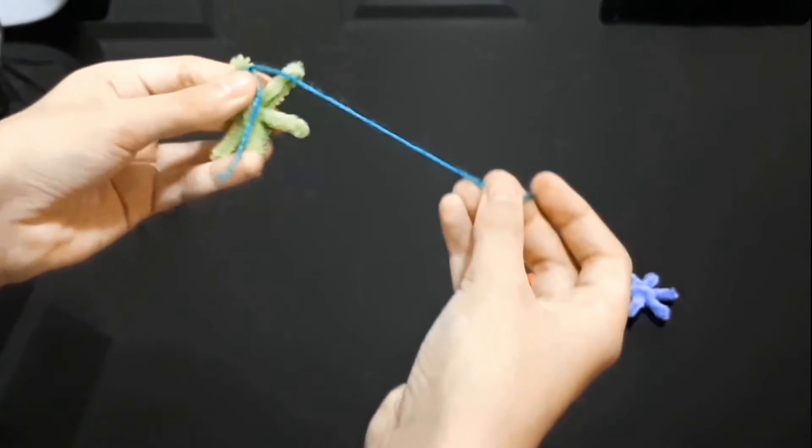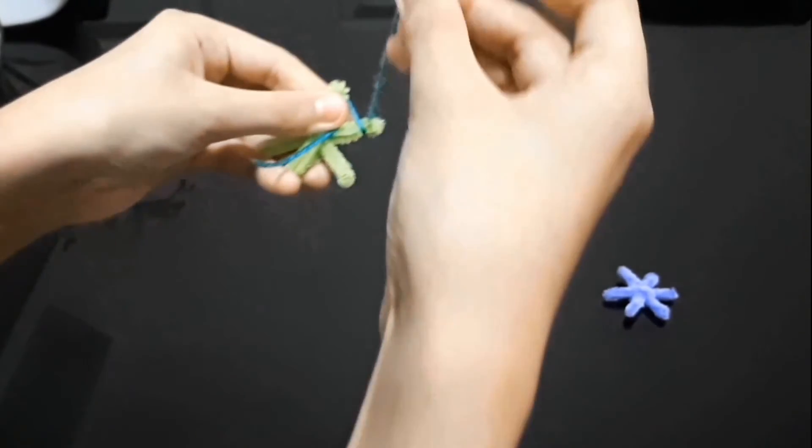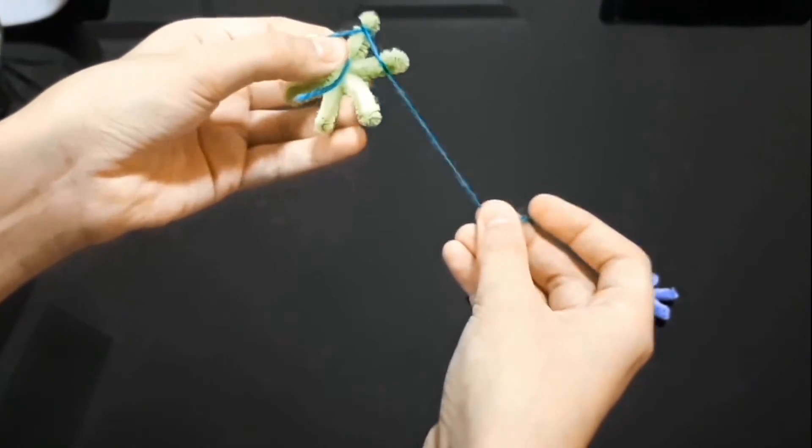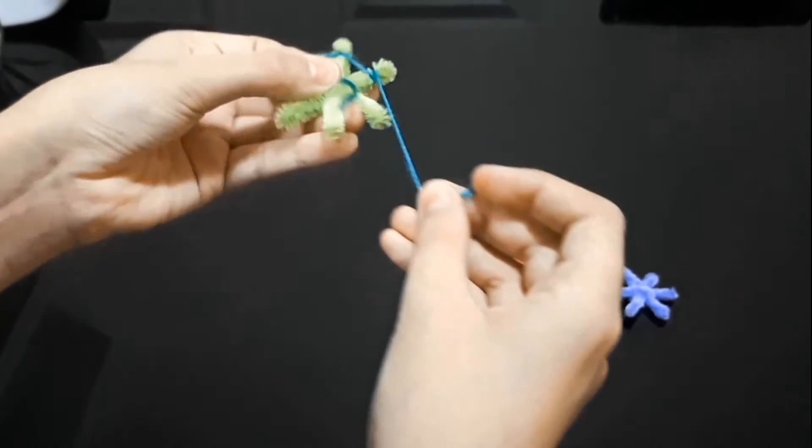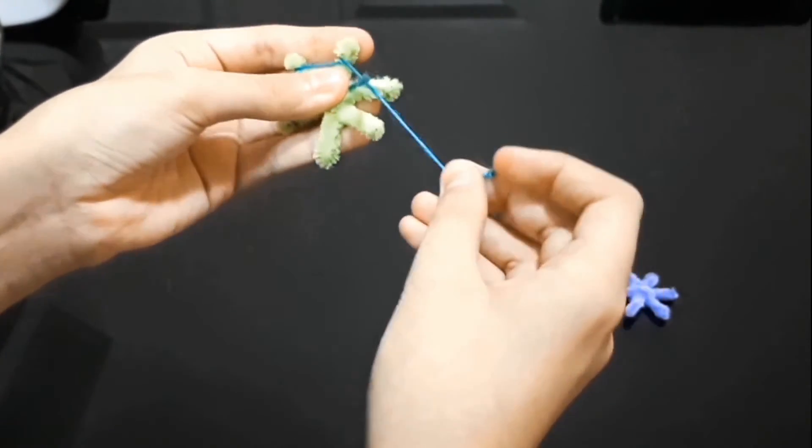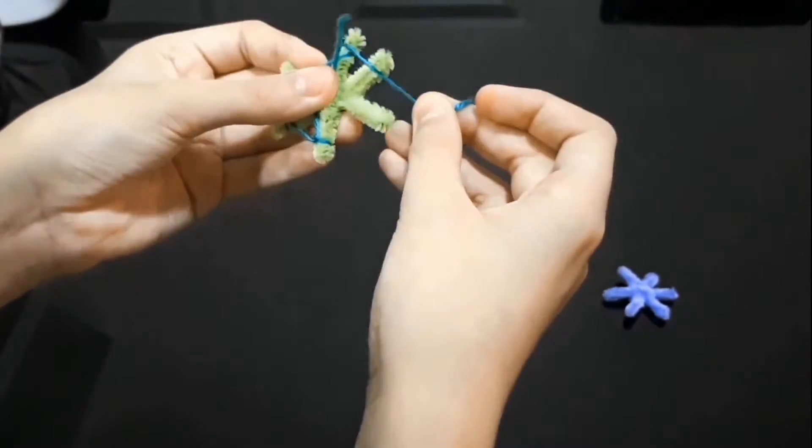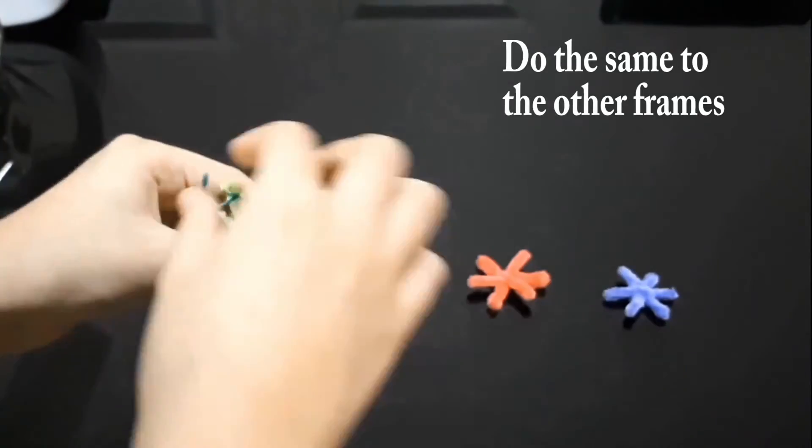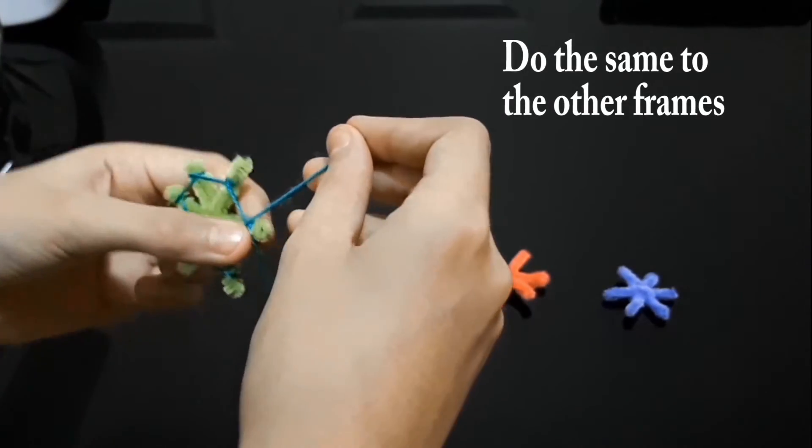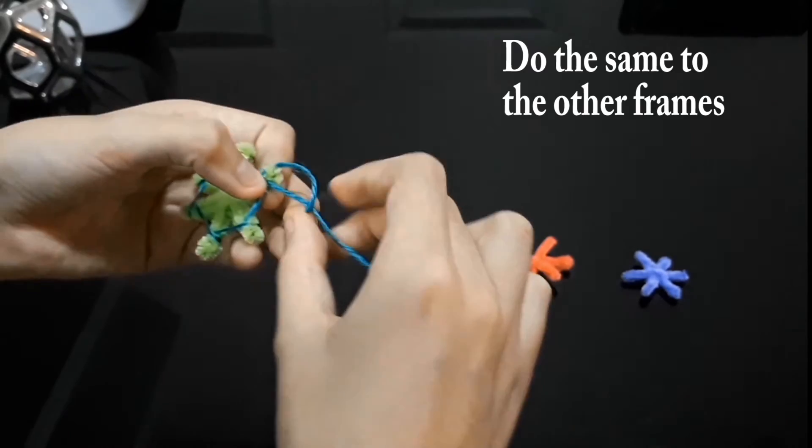Now, all we do is just wrap this around each of the points. Now, we just tie another double knot right here.